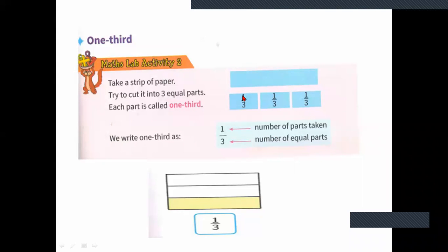Number of parts taken is the numerator and number of equal parts is the denominator. See here — in a sheet they have divided into three equal parts. We have to find the shaded part in fraction. A paper is divided into three equal parts and they have shaded one part with yellow color. The fraction is one by three — three parts divided equally so we write three below, and only one part is shaded so we write one above as numerator.